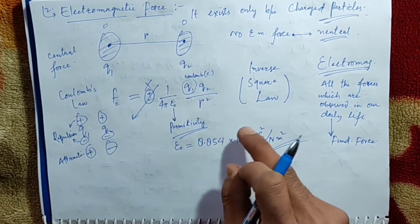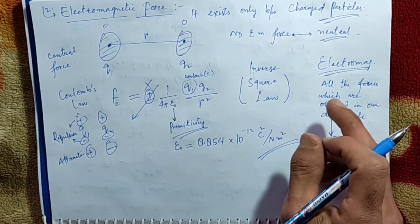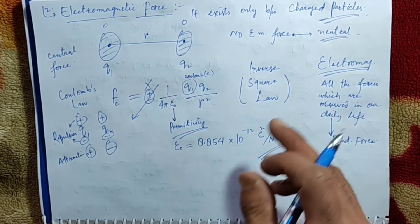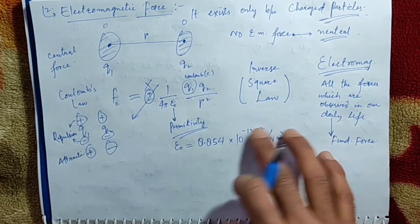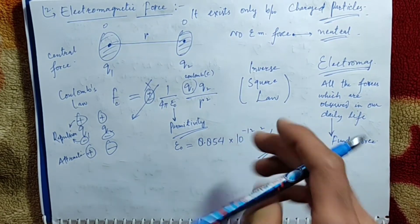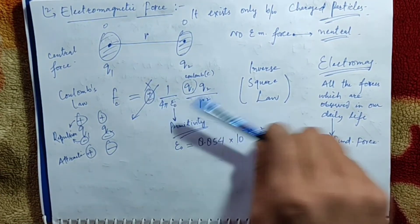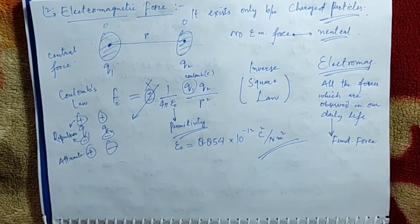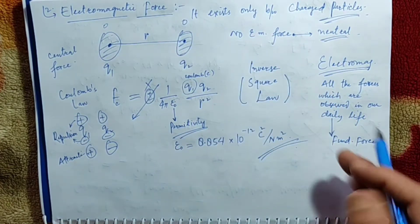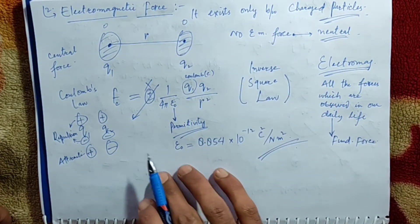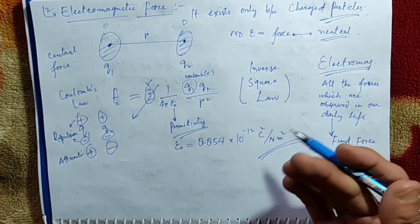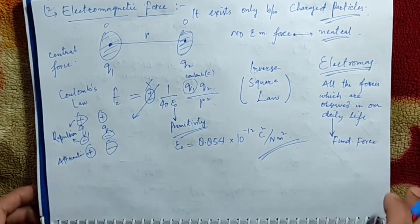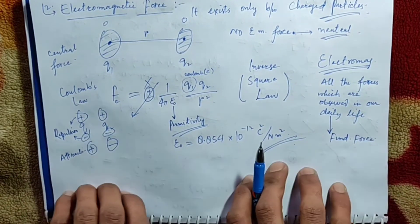So these were the two forces observed in our day-to-day life. Gravity is also observed like this. Electromagnetic force is also observed in our day-to-day life — like in muscular forces, spring forces, frictional forces, and other stuff like that.